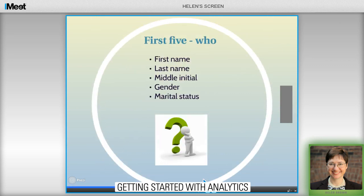The first five are all about who they are — what's their name, their gender, their marital status. If you don't have those last two, that's just fine, but it is useful information to start thinking about gathering if you're not already.